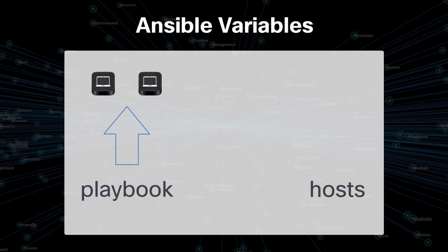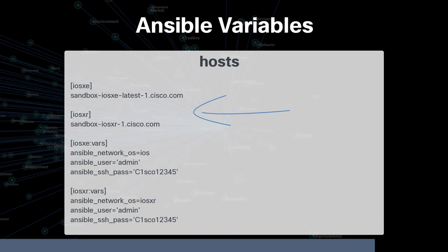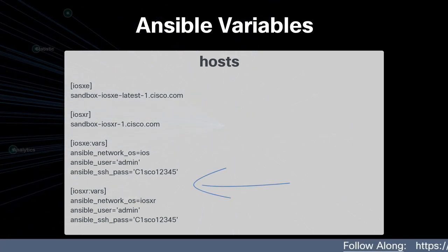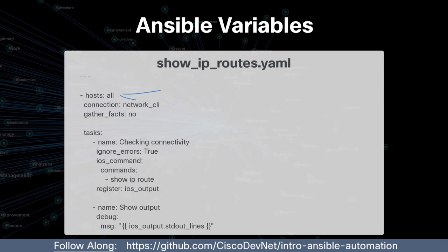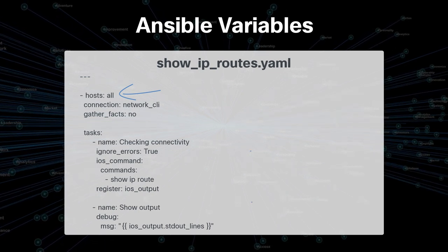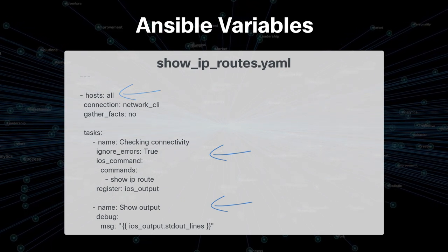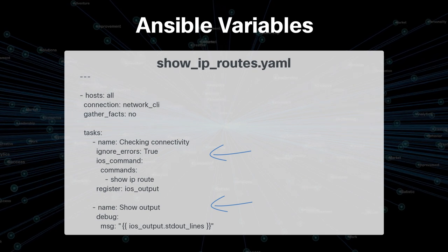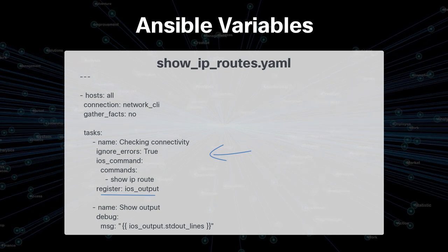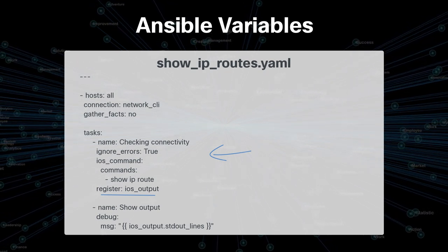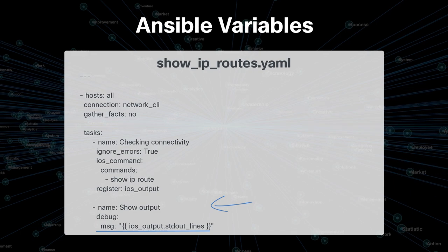Another way to feed device info into the playbook is by adding device details directly in the host file. The playbook will take that information from the host file before sending it to the devices to connect. We're only using two files this time. The host file includes two groups with their devices, and the variables are defined for each of those groups. In our playbook we have selected hosts: all, so both tasks will run against all devices. We use the register keyword to store the output into a new variable called ios_output, then display the standard output onto the screen.